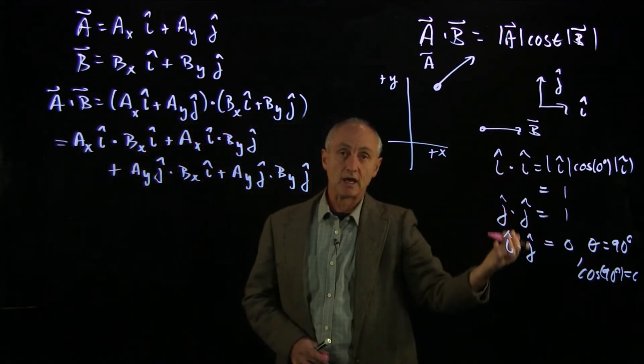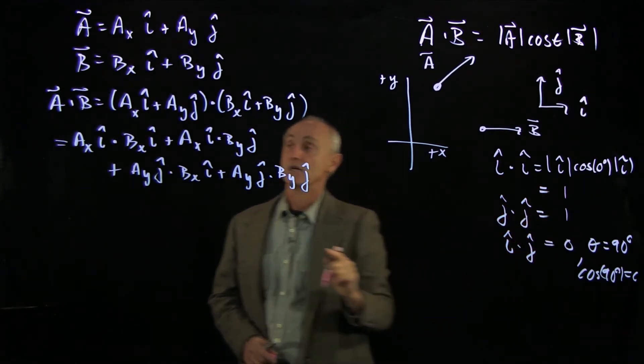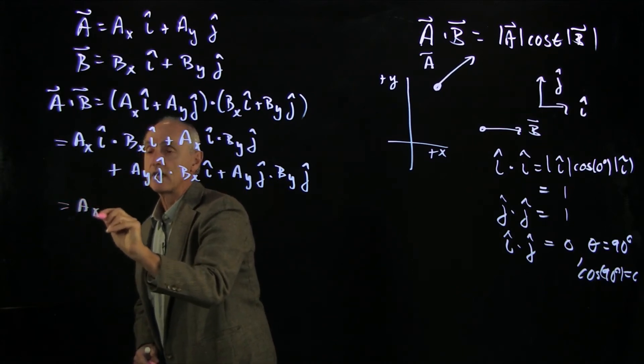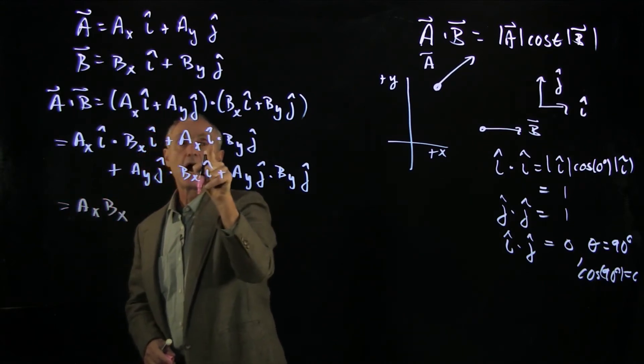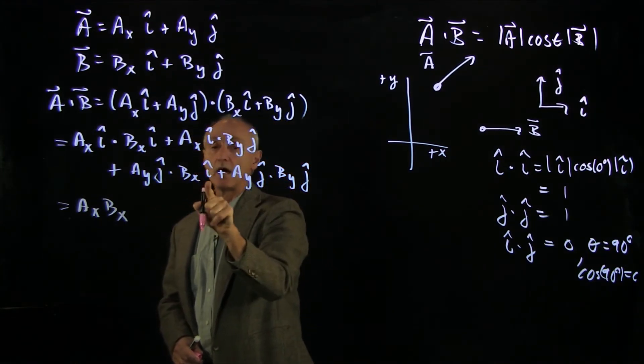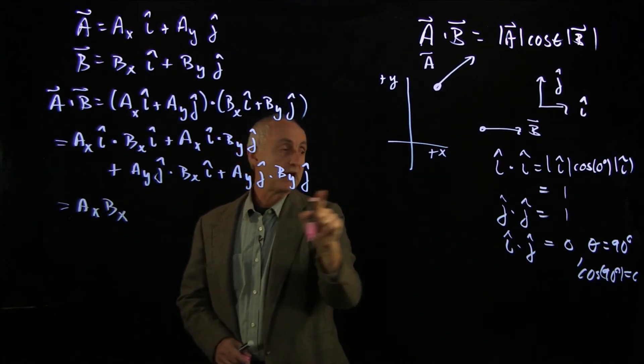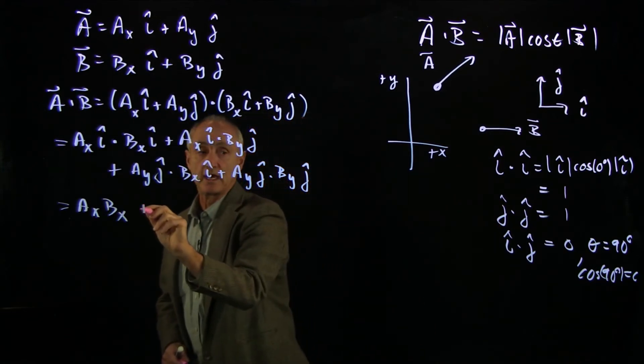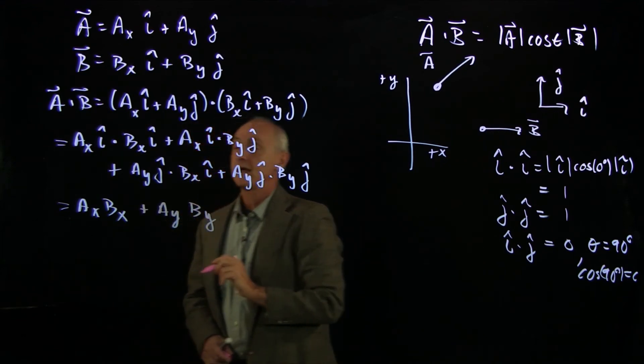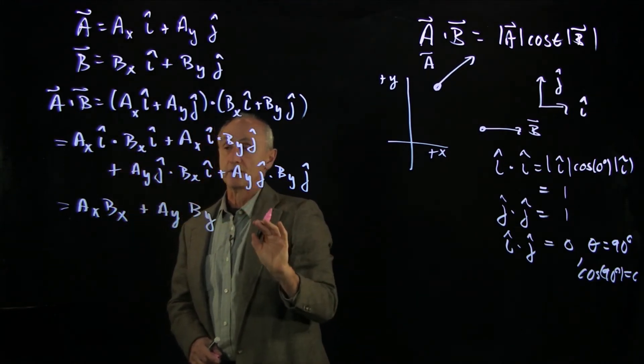And the only part of a dot product that matters is how the unit vectors dot. And that's why we have these two results: i hat dot i hat is 1, j hat dot j hat is 1, and i hat dot j hat is 0. So the first term is ax bx. i hat dot j hat is 0, so we don't need that. j hat dot i hat is 0. And finally, j hat dot j hat is 1, and so we get plus ay by. And that's how we define the dot product in Cartesian coordinates of two vectors.